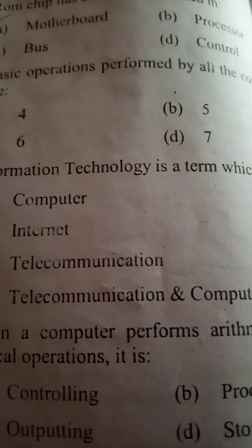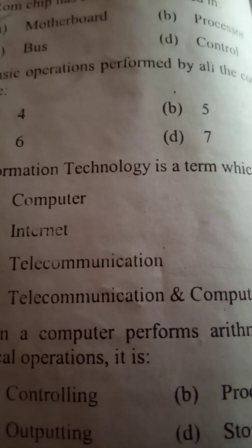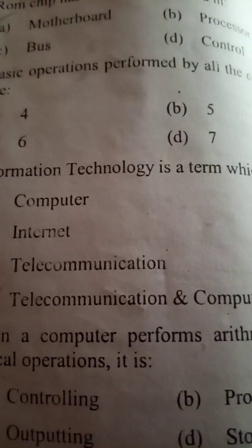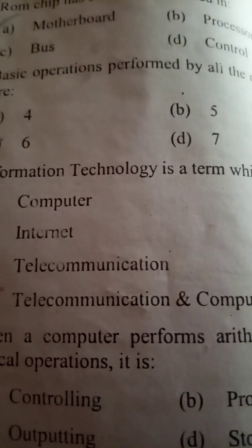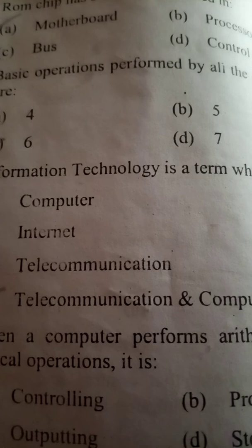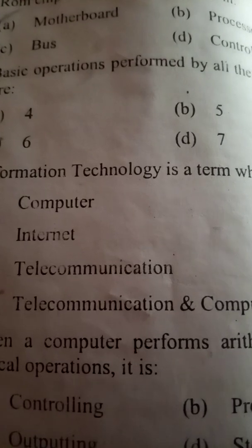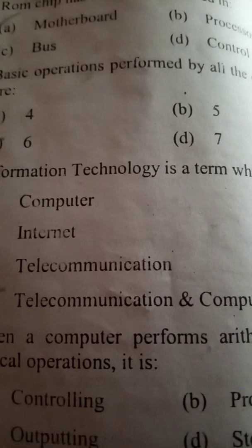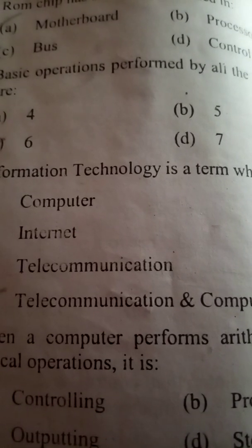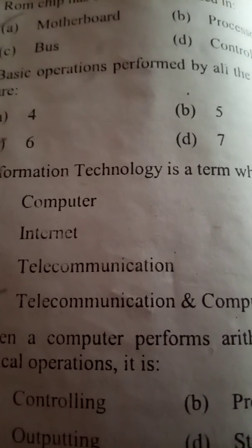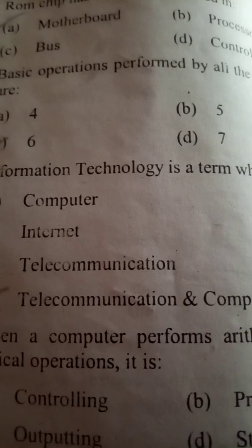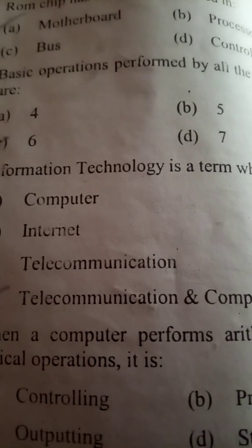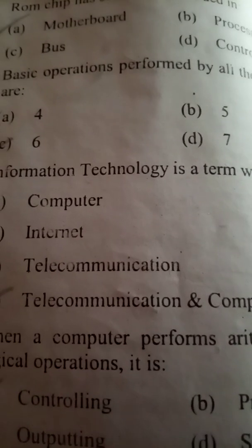Data processing is a series of actions that convert input into output. The storage capacity of a floppy disk is 1.44 MB. A database can store letters, numbers, words, and sentences. The CPU is an example of hardware.